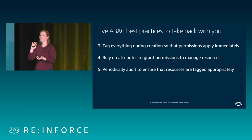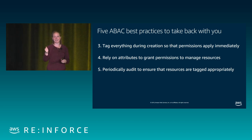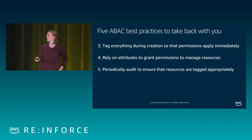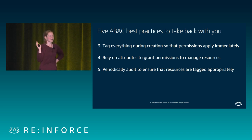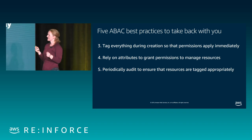Third: tag everything during creation so permissions apply automatically. When bubbles created a resource with a tag, anyone operating with bubbles on their role could then interact with it. Fourth: rely on attributes to grant permissions to manage resources — that one matching line scales your permissions without listing ARNs every time. Fifth: periodically audit those attributes — people do it with identity providers and tags on resources — spend time in your audits to find things in between.